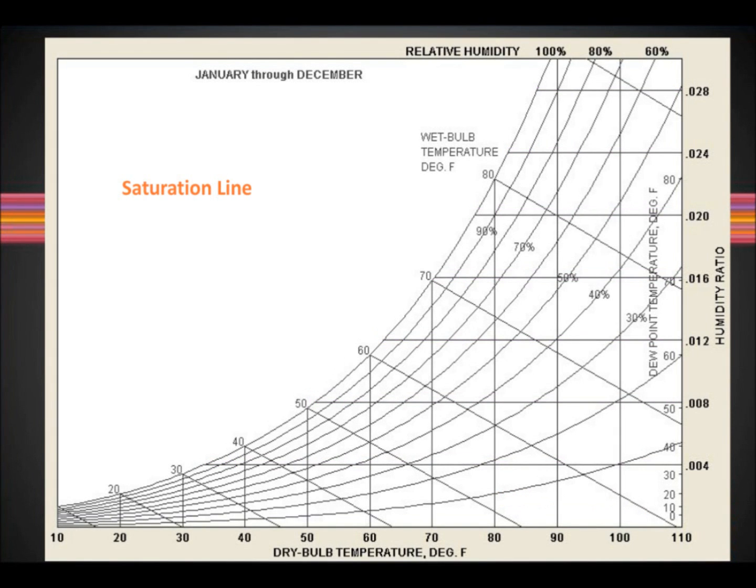Saturation line represents the fact that air can hold more moisture as the temperature increases and less moisture as the temperature decreases. This means that as it gets colder, moisture might be precipitated out in the form of dew, fog, rain or snow.